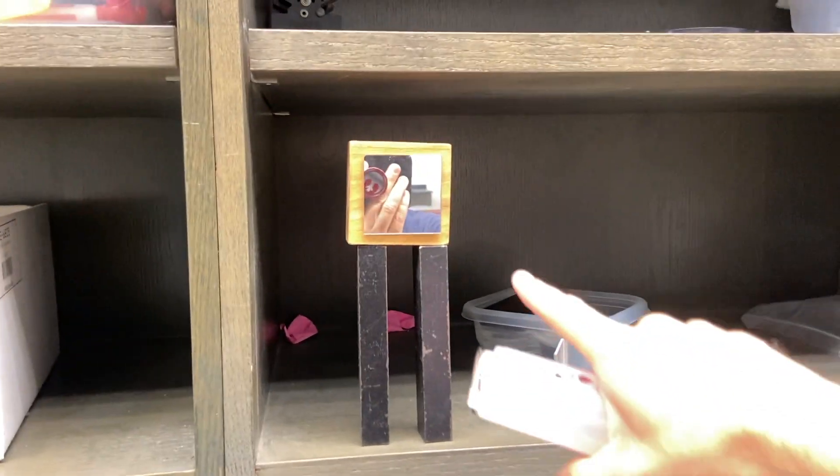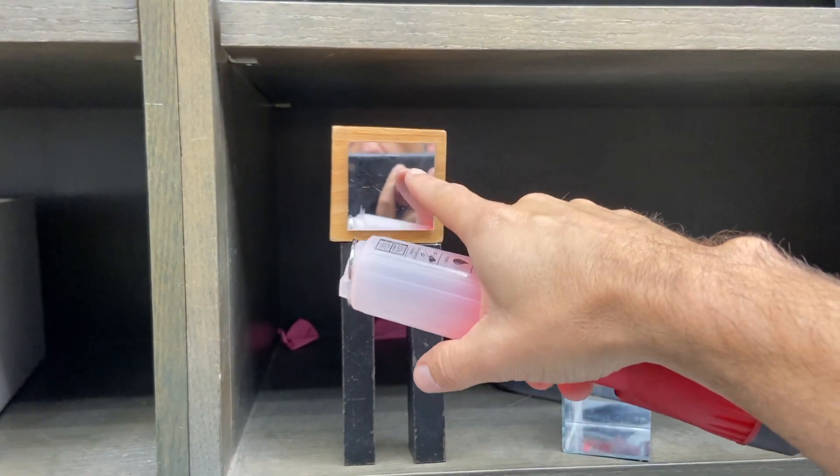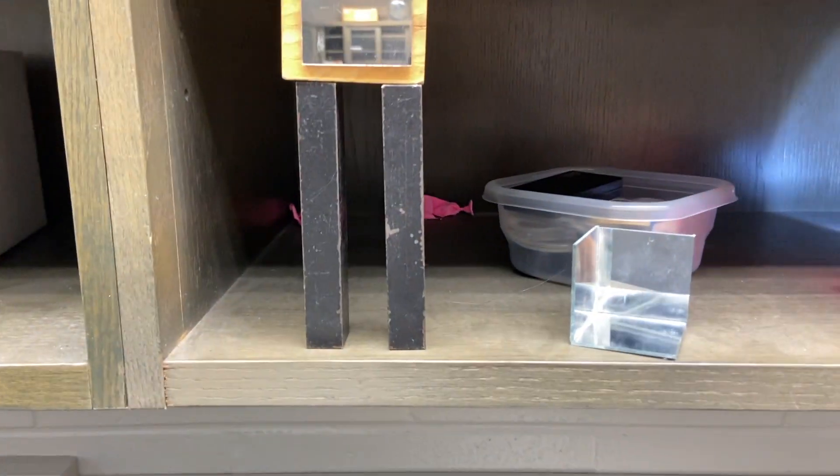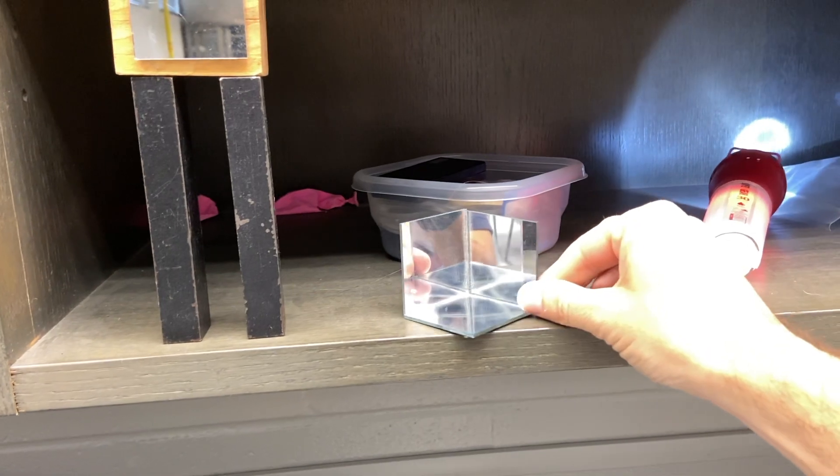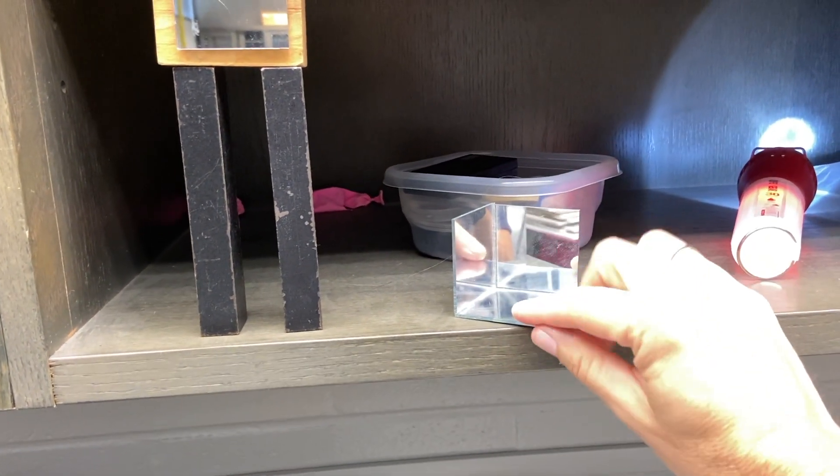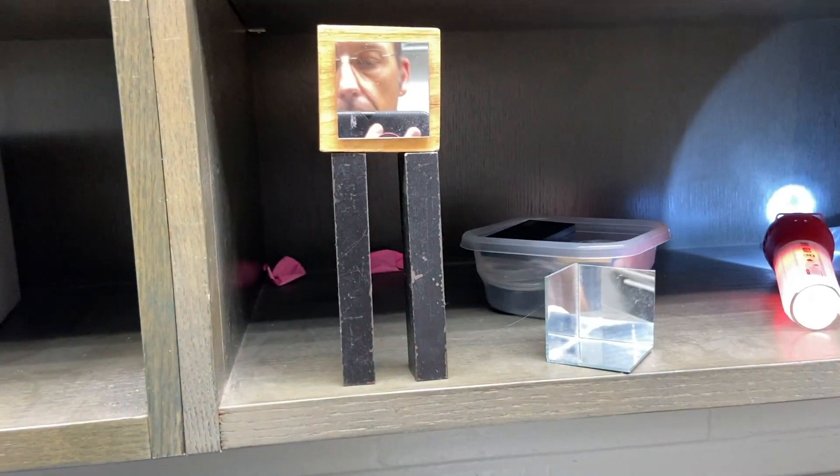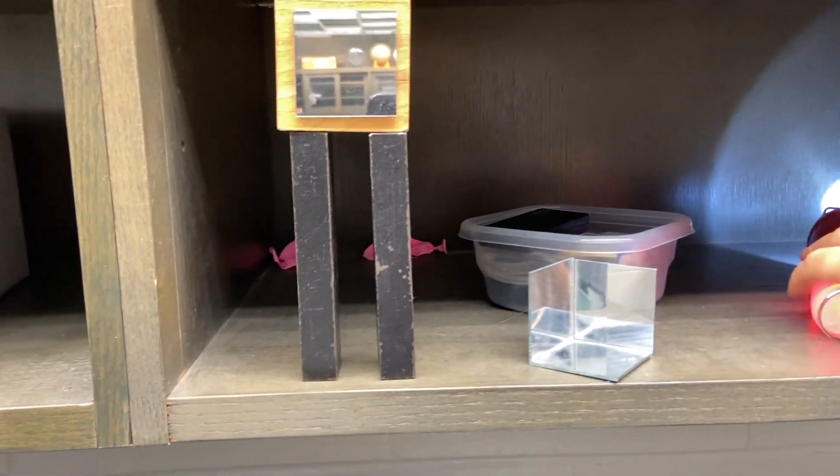Okay, so I have two mirrors here. I actually have two setups. Here's just a plain flat mirror. You can see my reflection in this. And then right here, I have three mirrors at right angles to each other to make a little box. So this is a retroreflector, and this is just a plain mirror. Let me show you how it works.